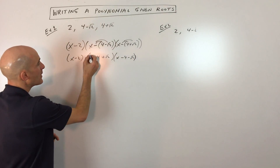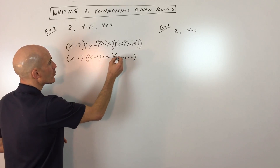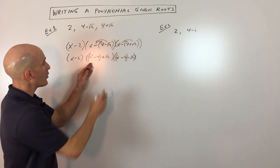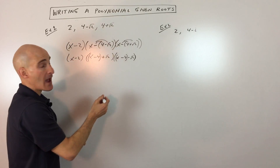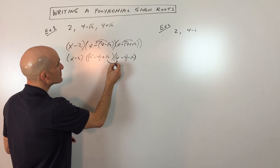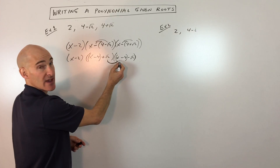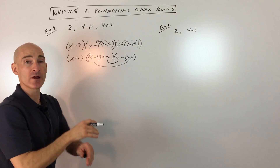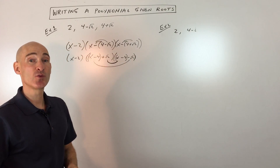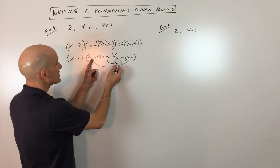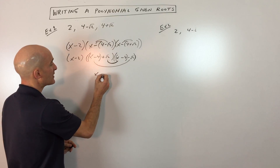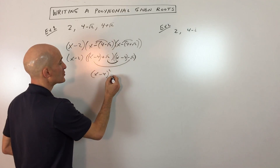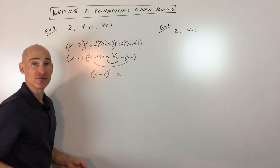Now we're going to group the x minus 4s together. We're going to multiply these together. The inner terms — square root of 2 times x minus 4 — and the outer terms — negative square root of 2 times x minus 4 — have opposite signs, so they cancel one another out. When we multiply these together, we get x minus 4 times x minus 4, so that's x minus 4 squared. And then square root of 2 times negative square root of 2 is just negative 2.